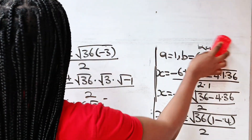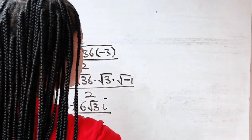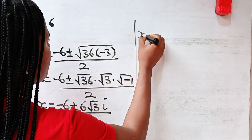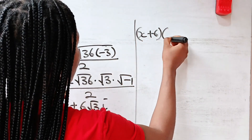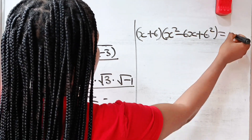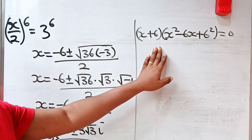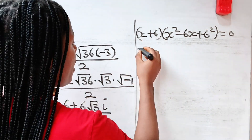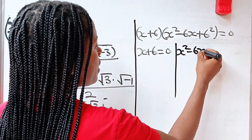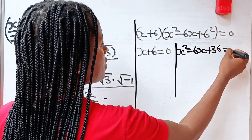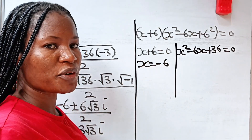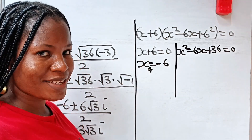Now going back to the other factor: x plus 6 multiplied by x squared minus 6x plus 6 squared equals 0. From x plus 6 equals 0, we get x equals minus 6. This is the fourth value of x.